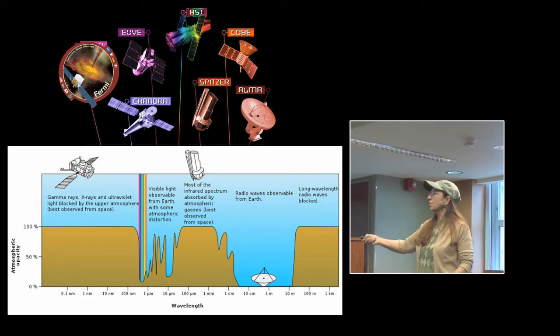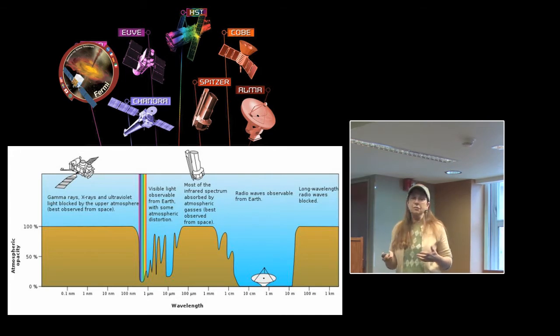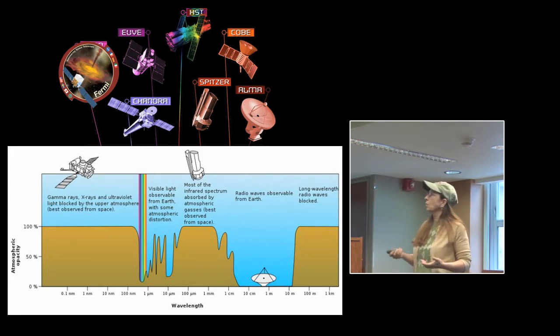Of course, visible light we can see mostly from the Earth, but there is distortion from the atmosphere that has to be taken into account.